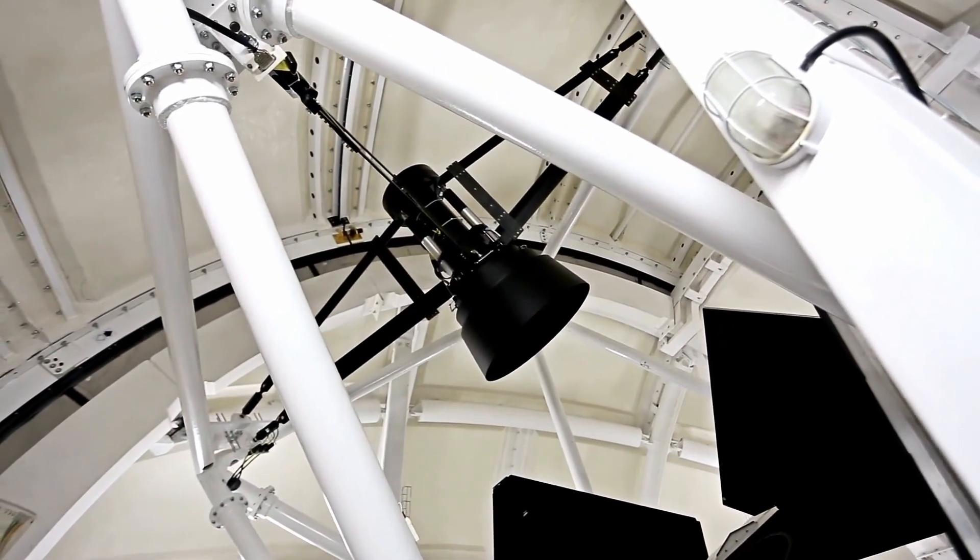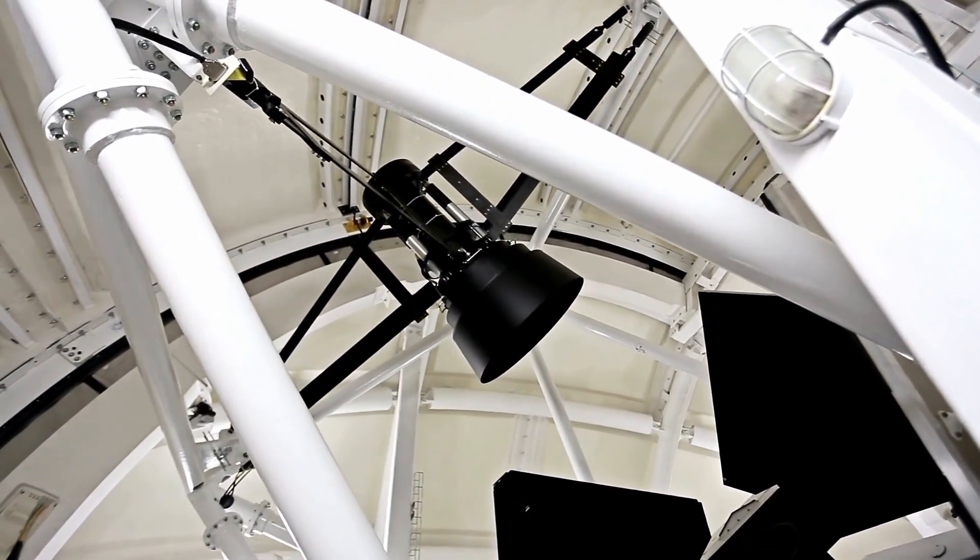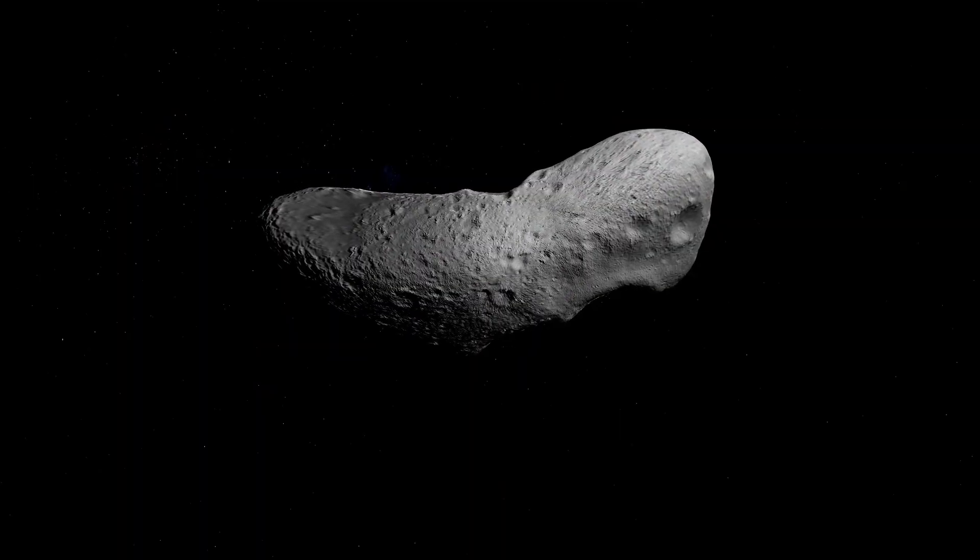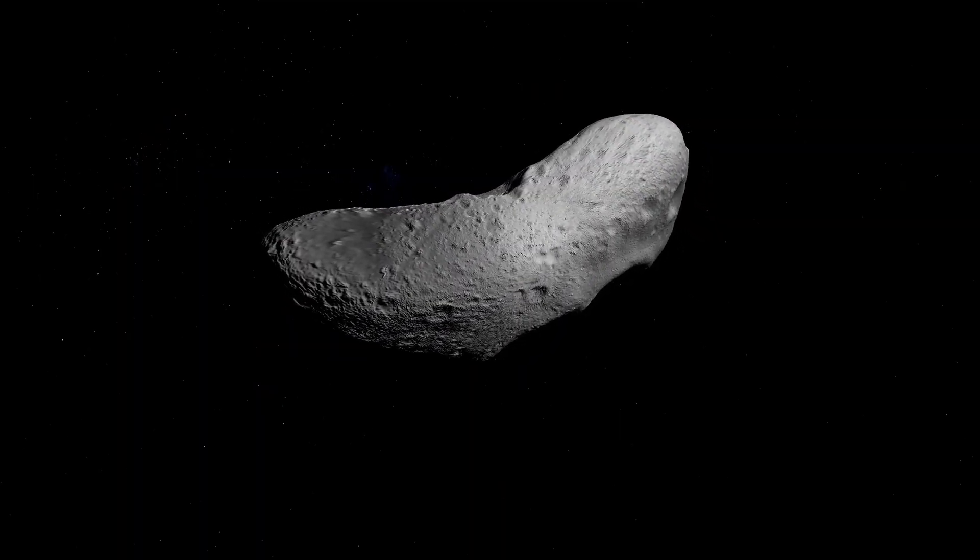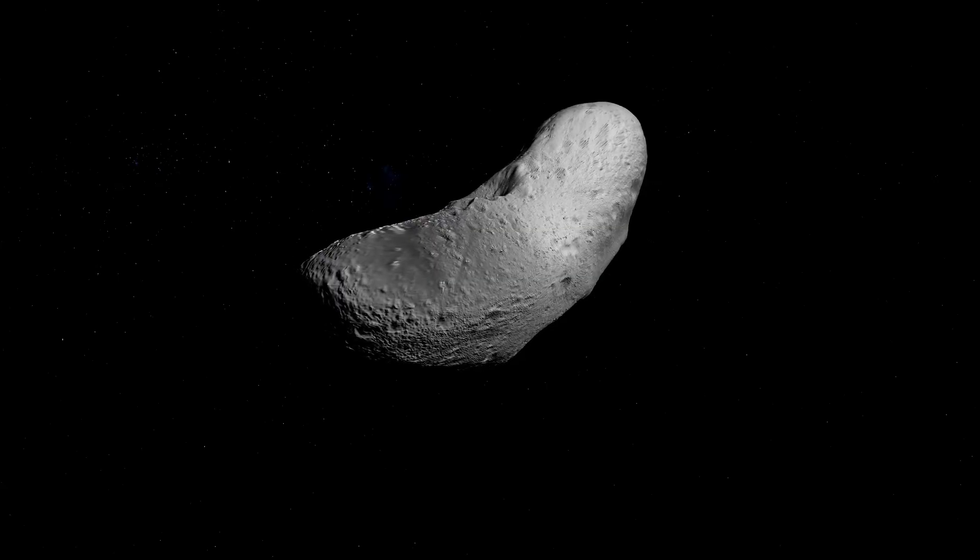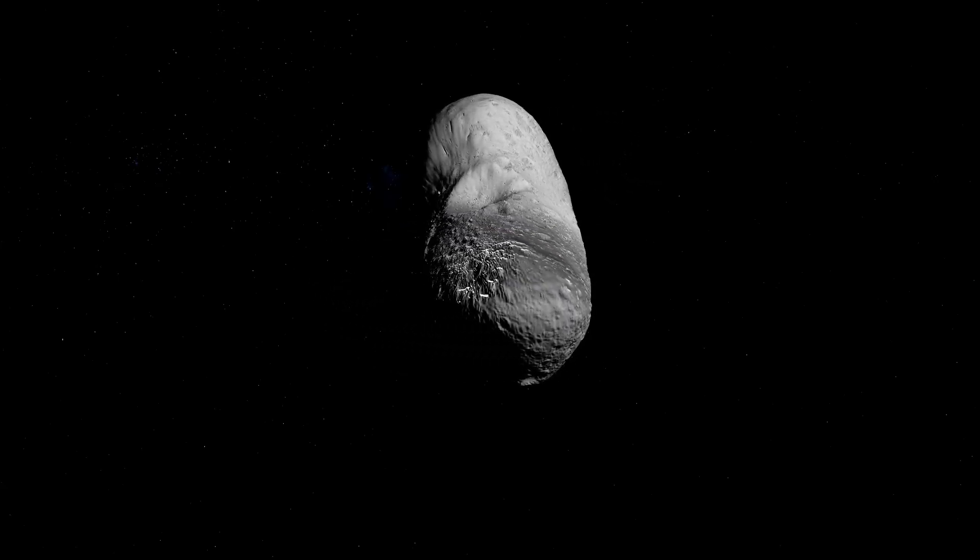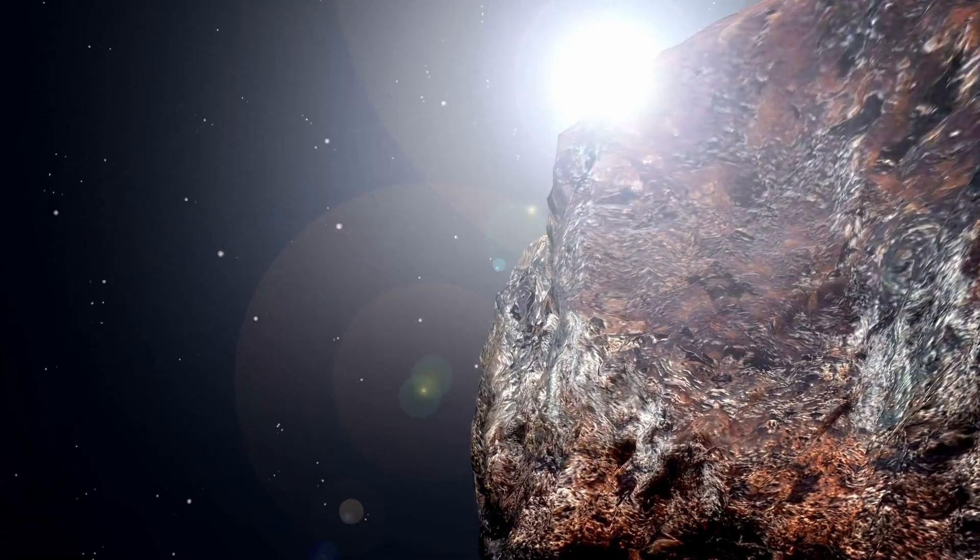When 3i Atlas was first catalogued, it was immediately obvious that this was no ordinary visitor. Objects from outside our solar system don't usually pass so close to Earth. They blaze by at wild angles on unpredictable paths, and then disappear forever into the black.